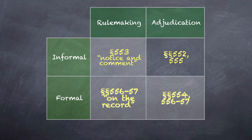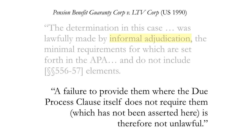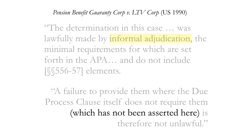The Due Process Clause may require more than what the APA provisions in the adjudication column provide. The Supreme Court noted this in Pension Benefit Guarantee v. LTV Corp., where the court wrote: 'The determination in this case was lawfully made by informal adjudication, the minimal requirements for which are set forth in the APA and do not include sections 556–557 elements. A failure to provide them where the Due Process Clause itself does not require them, which has not been asserted here, is therefore not unlawful.' The court had no occasion to address the constitutional question because the party aggrieved by the agency's procedures had not raised it.